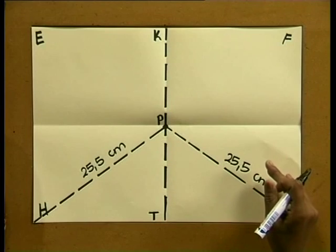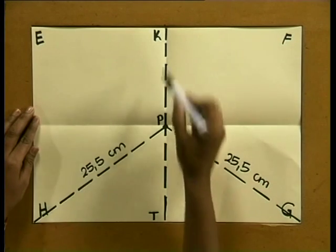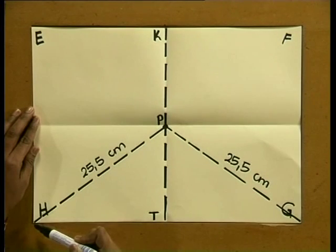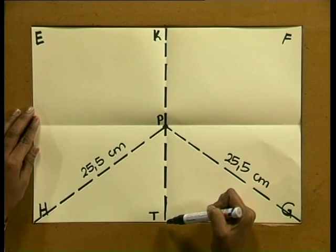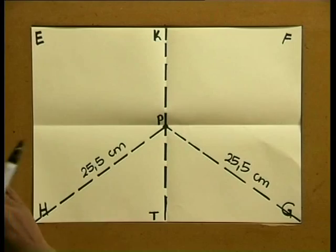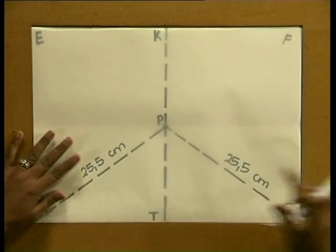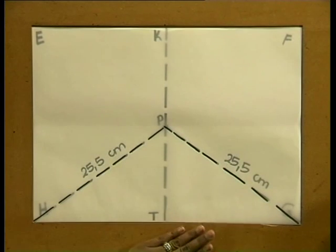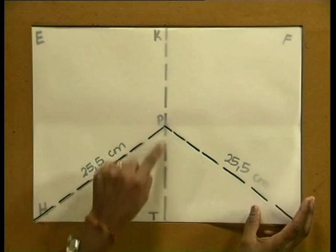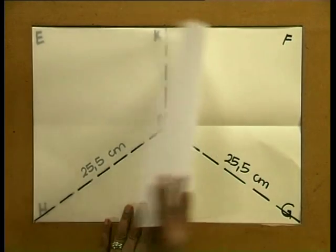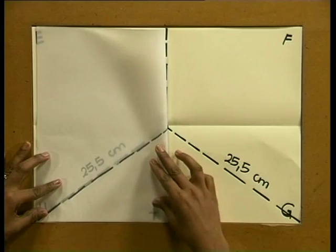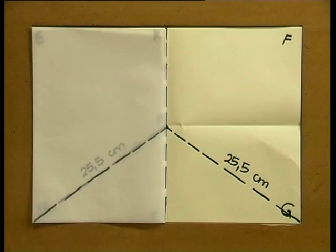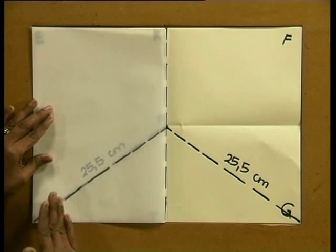Now before we cut out our model, have a look at this line KPT. We know that this is the line of symmetry for rectangle EFGH. Do you think that PT will be the line of symmetry for triangle PGH? I will use my tracing paper to trace out the triangle. The line of symmetry divides a figure into two equal parts, so if PT is the line of symmetry, it should divide the triangle into two equal parts. Let's fold our tracing paper along the line PT to see if this is true.